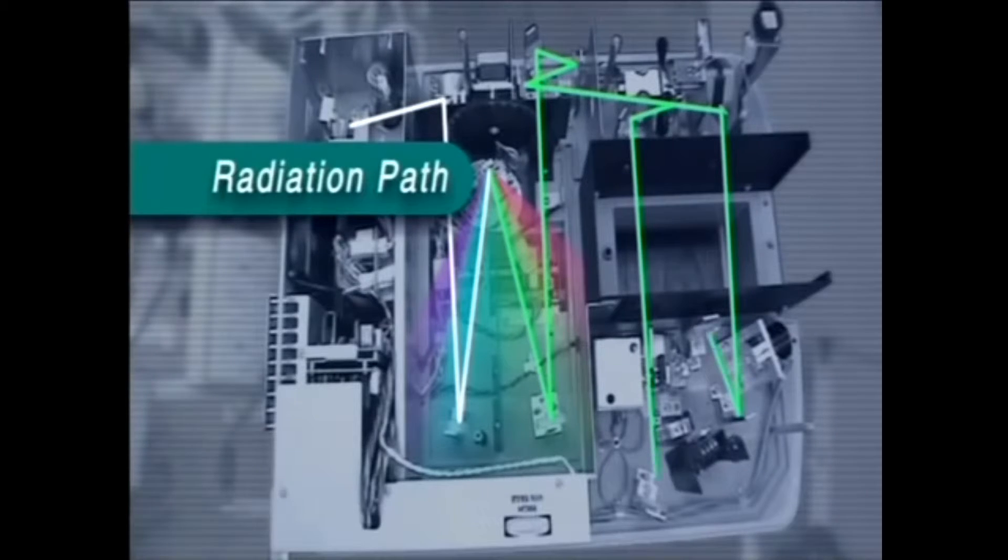Both sample and reference beams are directed by mirrors onto a detector. This compares their intensities and sends a signal proportional to the ratio to the computer that controls the instrument. The logarithm of this ratio gives a quantity called absorbance, which measures how much light has been absorbed by the sample at that particular wavelength.